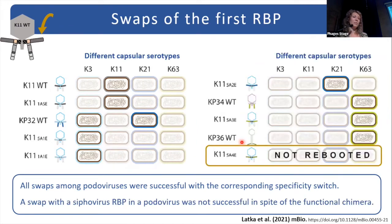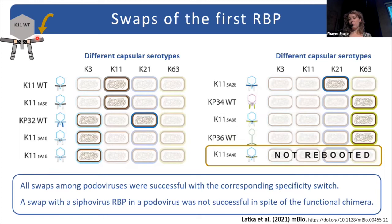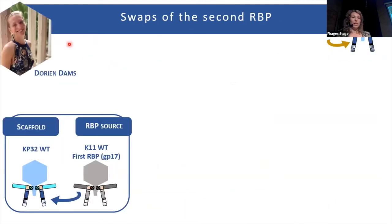But it was not like this all the time. Unfortunately, when we tried to put a receptor binding protein from a siphophage into this position, we were not able to acquire infective virions — despite the fact that when we tested this chimera at the protein level, it was fully functional.